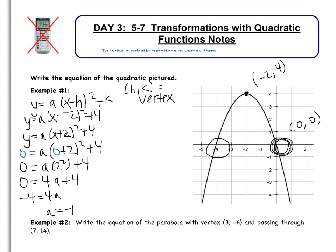Last thing I need to do is I need to rewrite my equation. Now that I found a, I'm done with the point (0, 0). I just need to use a, and I need to use the vertex. So my equation becomes y equals negative 1, or just negative, (x add 2) squared add 4. And that's it.